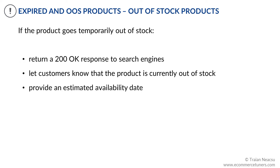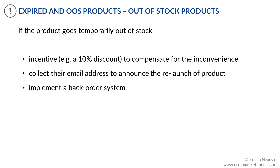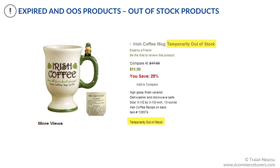If the product goes temporarily out-of-stock, the page should return a 200 OK response and let customers know that the product is currently out-of-stock. It should also provide users an estimated availability date, if possible. You should offer an incentive to compensate for the inconvenience and to collect their email address to announce the relaunch of the product. Additionally, make sure users can backorder the product. In this image, you can see that the temporarily out-of-stock messaging is easy to spot and clear, however it would be better to have it separated from the product name.